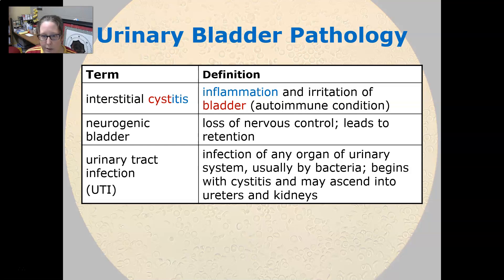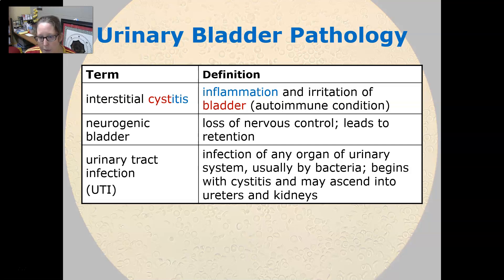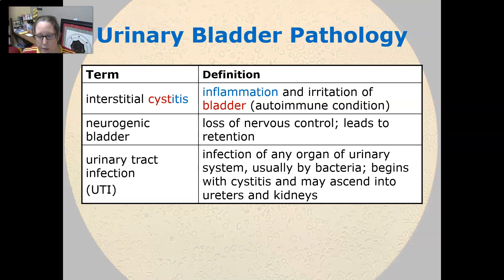Neurogenic bladder leads to urinary retention — the inability to urinate — and the bladder retains the urine. Urinary tract infection, or UTI, is an infection of any organ of the urinary system, usually by bacteria. It begins with cystitis and may ascend into the ureters; the bacteria can climb up the ureters and settle into the kidneys, causing a kidney infection, which can be very severe. That wraps up our urinary bladder pathologies.